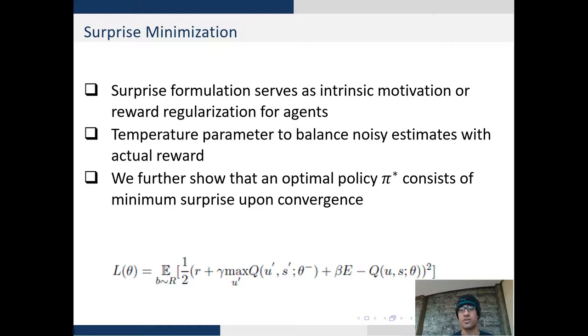Finally, a note on the surprise minimization in this objective: our objective serves as intrinsic motivation and reward regularization, where the agent is penalized if it encounters a surprising state. We use the temperature parameter to reduce noisy estimates and we further show that this designed loss converges to the optimal policy pi star, which consists of minimum surprise.